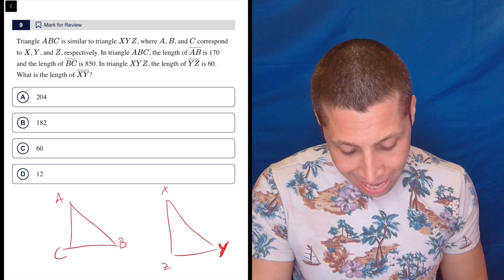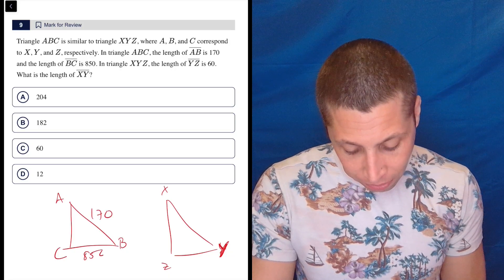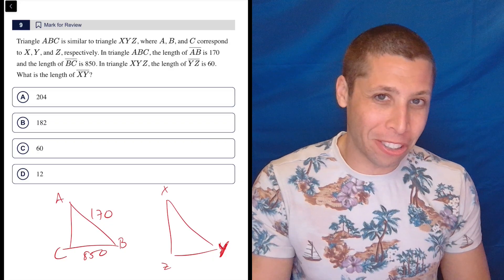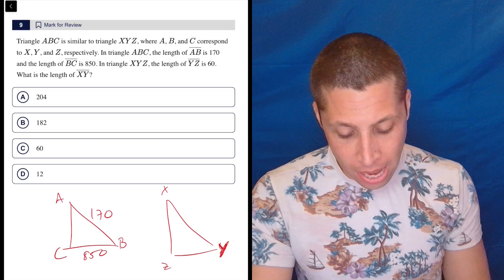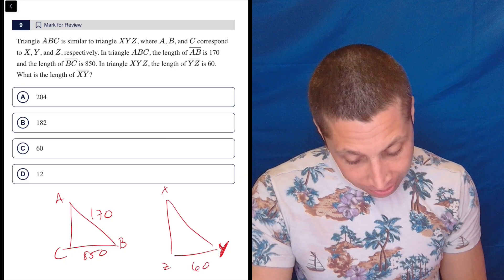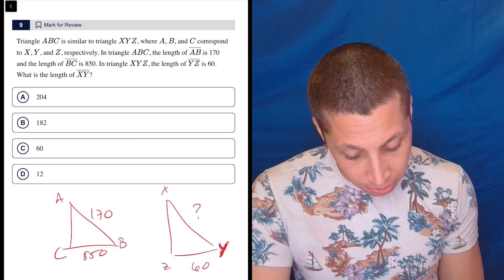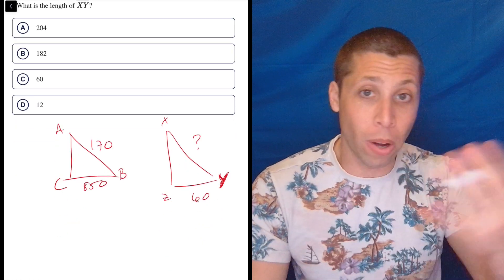In triangle ABC, the length of AB is 170, and the length of BC is 850. So already, my picture does not match the just common sense of how right triangles work, but I don't care. It's all proportions. In triangle XYZ, the length of YZ, so that's down here, is 60. What is the length of XY? Well, notice that's the same side that I was given on the other one, now I'm missing.